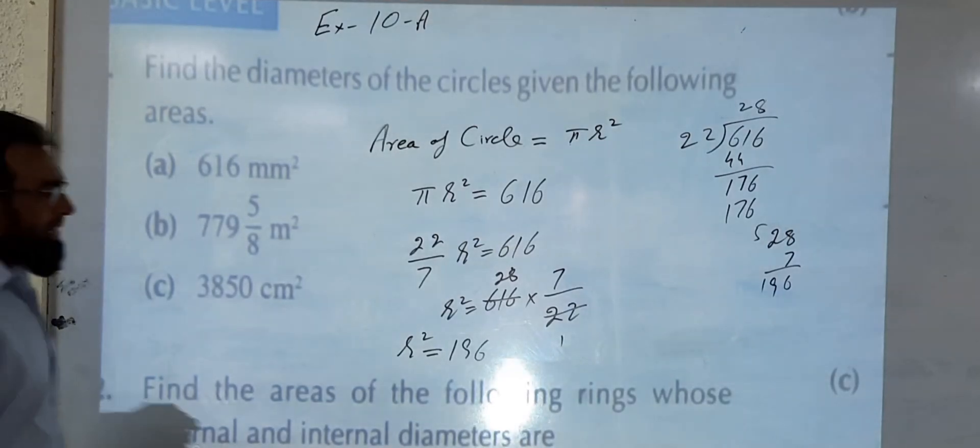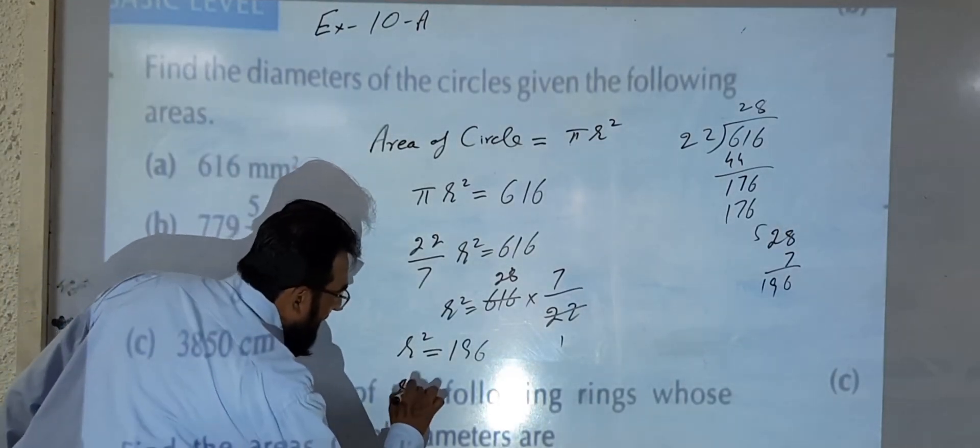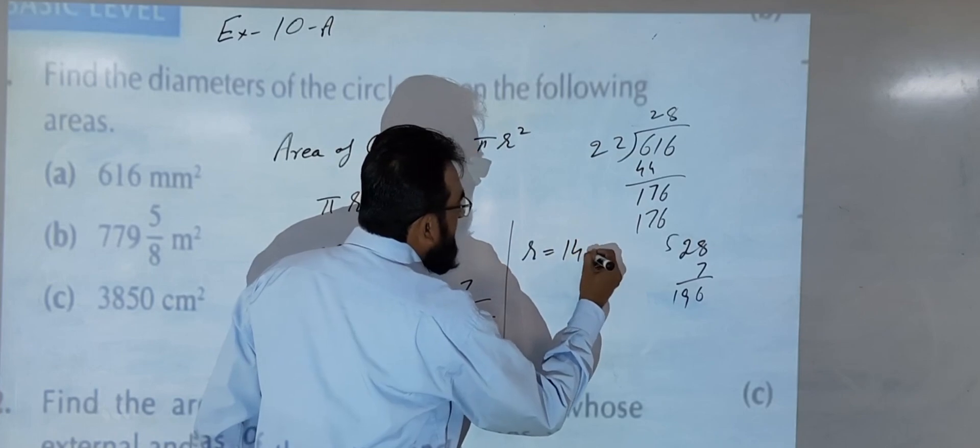So by taking the square root of this, r² = 196, so r is equal to 14 millimeter.